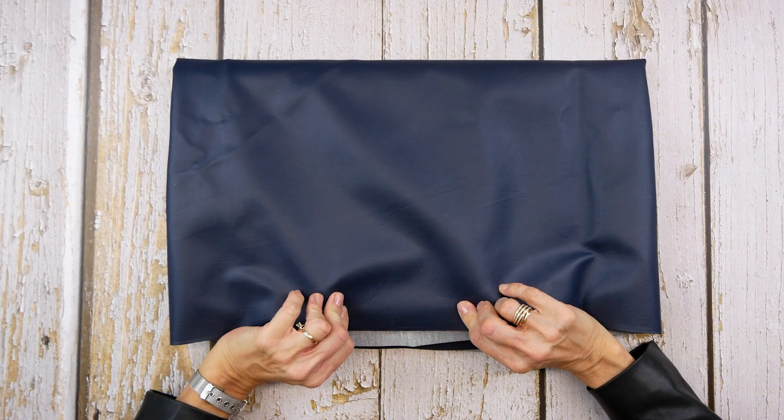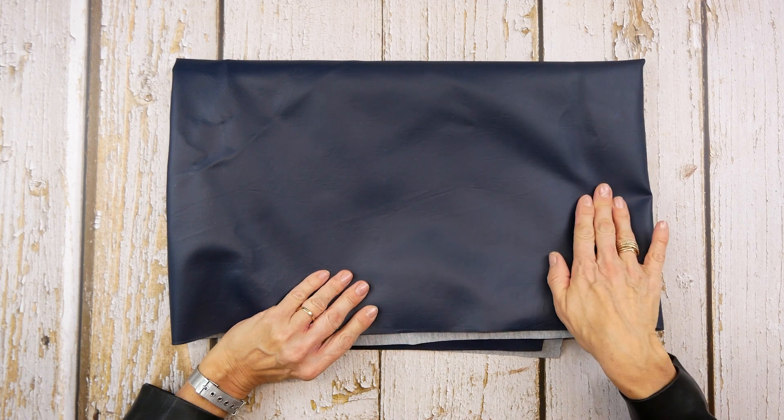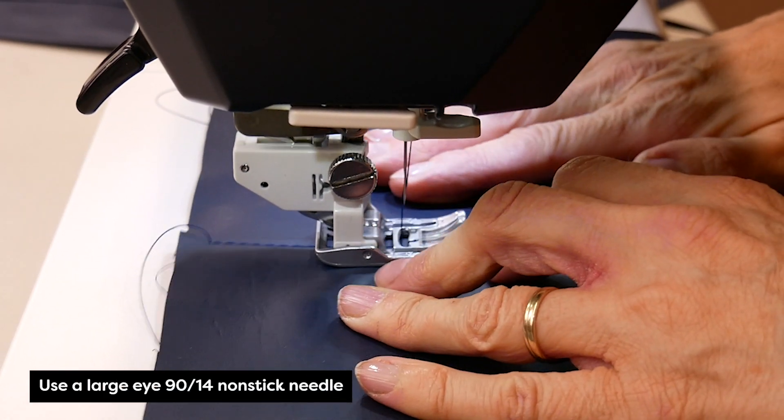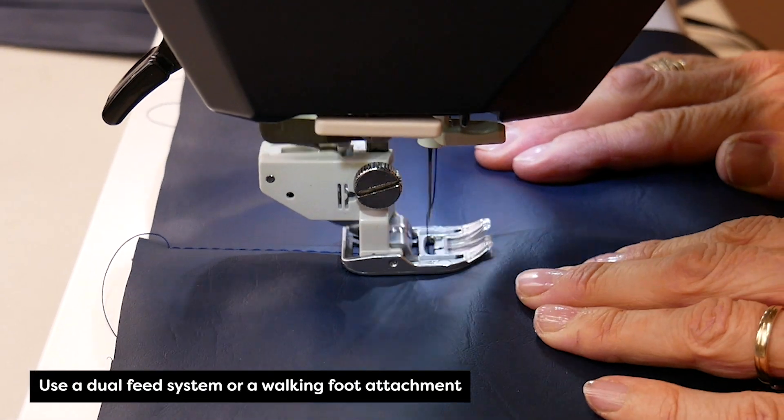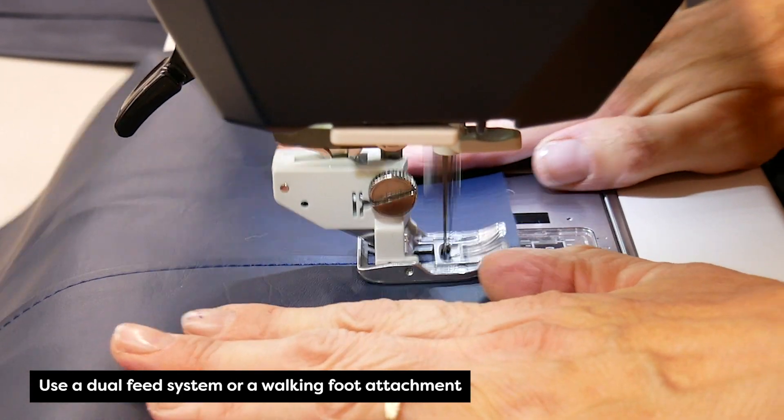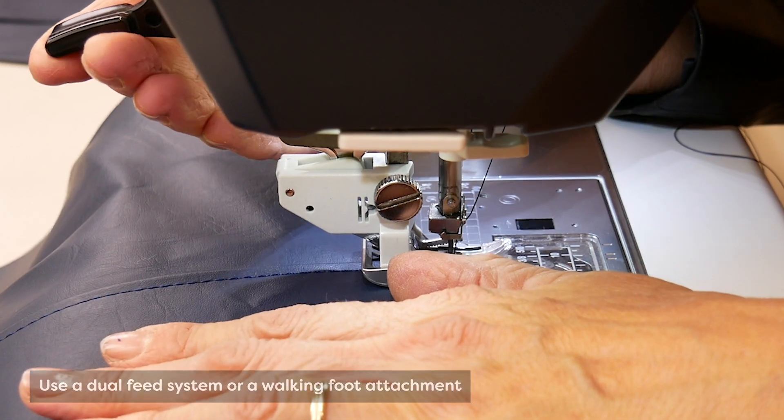Here are a few tricks to make sewing with vinyl easier. Use a large eye non-stick needle on your machine. If your machine has a dual feed system or a walking foot attachment, use this to keep the machine from sticking to the fabric and causing skipped stitches.